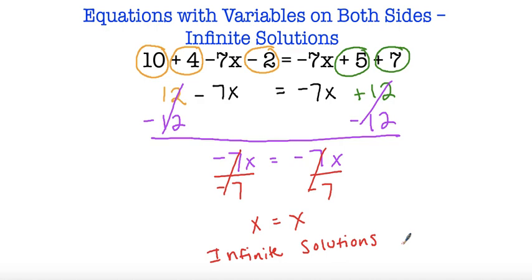And that's it. For infinite solutions, it does not matter what x is — x is any real number. It could be 1, it could be negative 1, it could be a half, any decimal, any fraction, any whole number, any integer, any natural number could be substituted in for x, and both sides of the equation will still be equivalent.